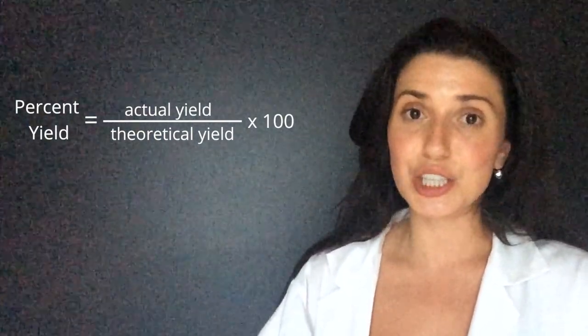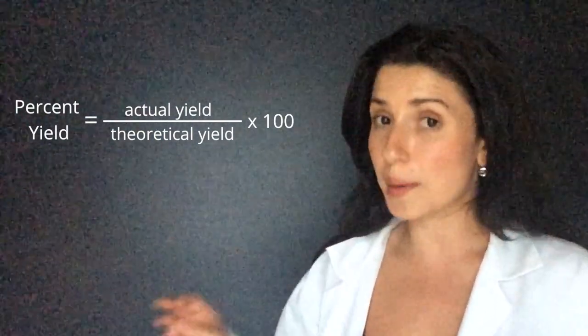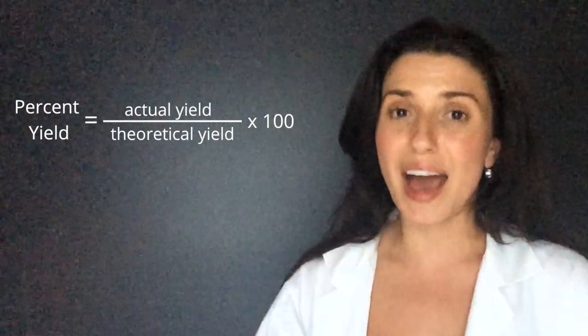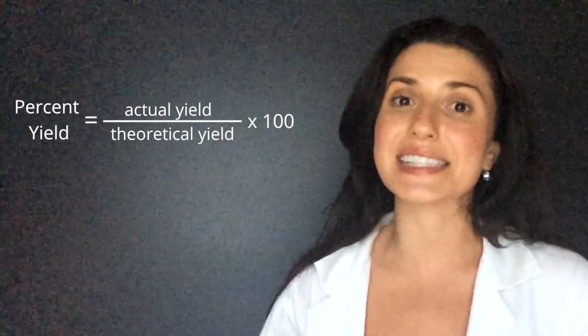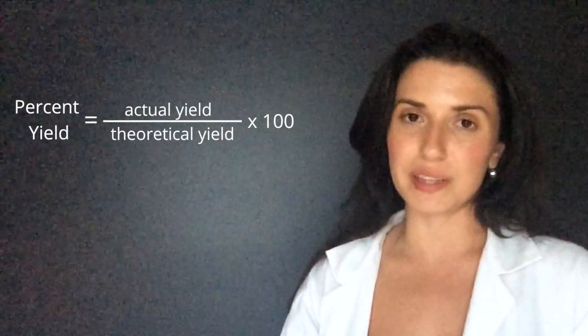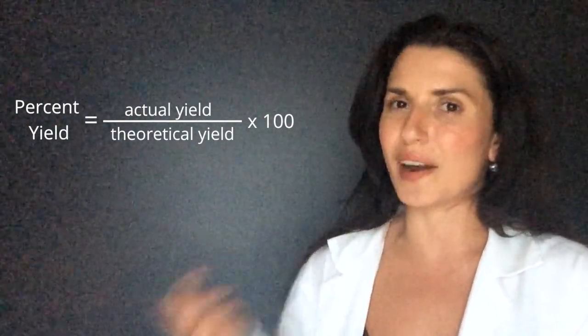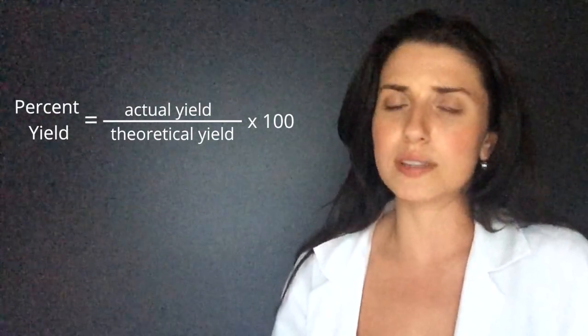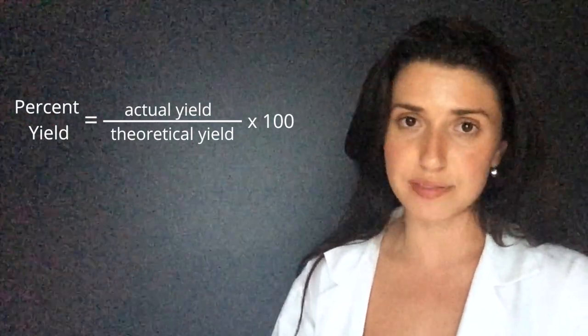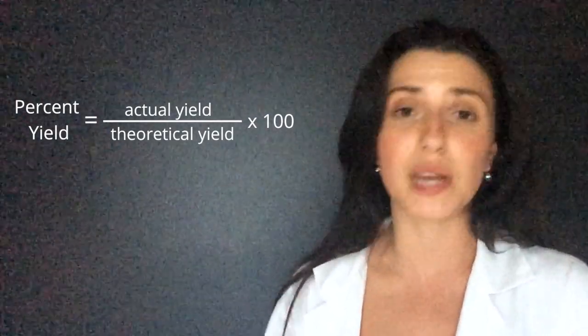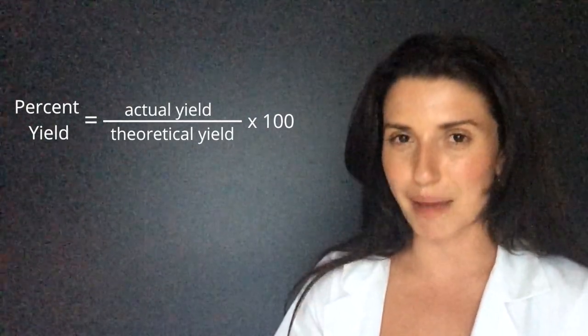To calculate the percent yield you can use moles or mass, but you have to make sure that the actual yield and the theoretical yield are in the same units. So although you have some flexibility, it's not like you could do one of them in mass and one of them in moles. No, either both have to be in moles or both have to be in mass. Remember this is a ratio, so it doesn't actually matter the units as long as they are the same.